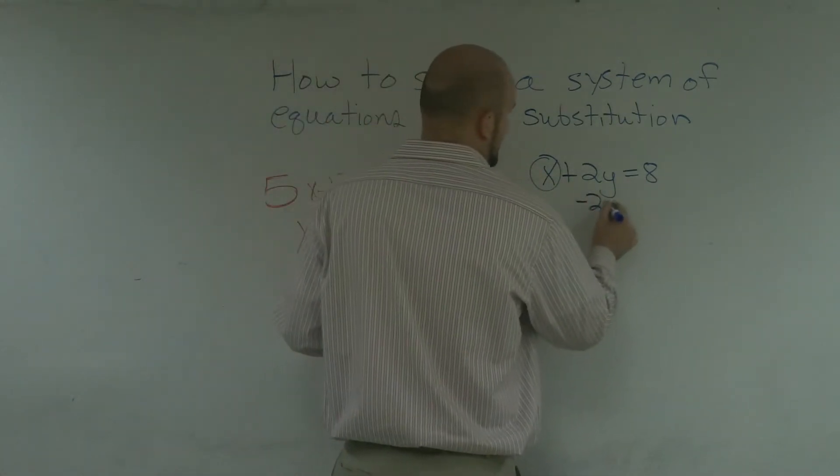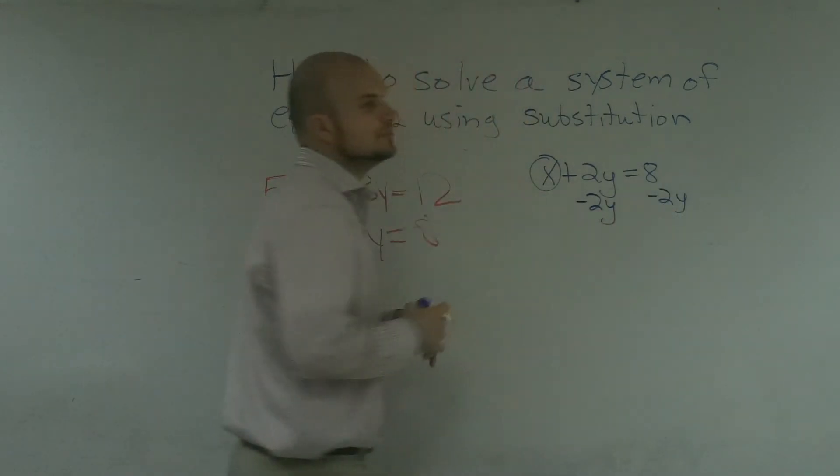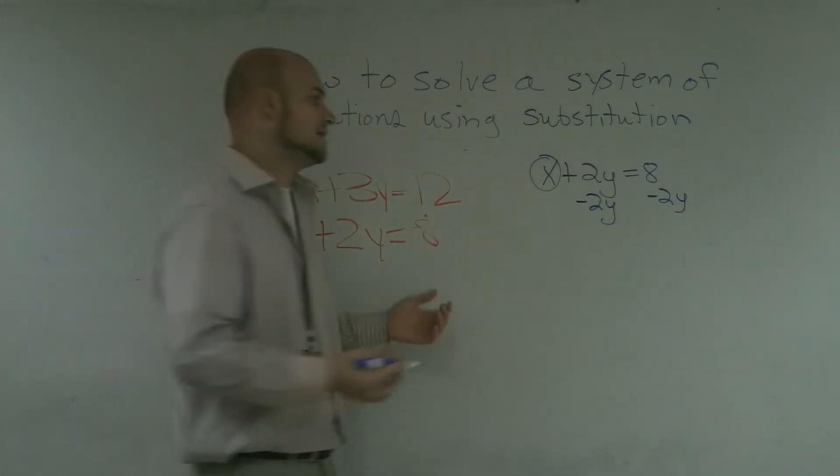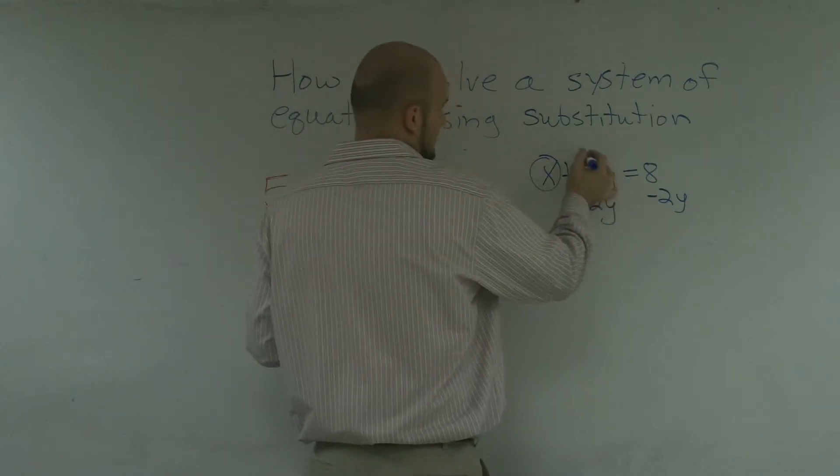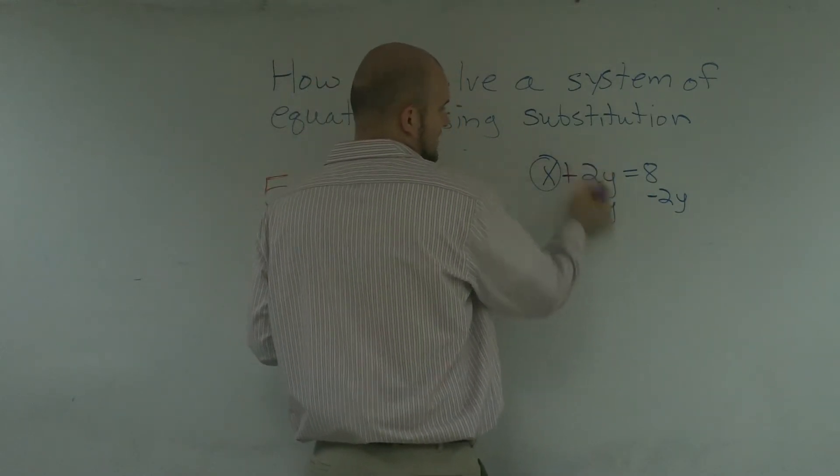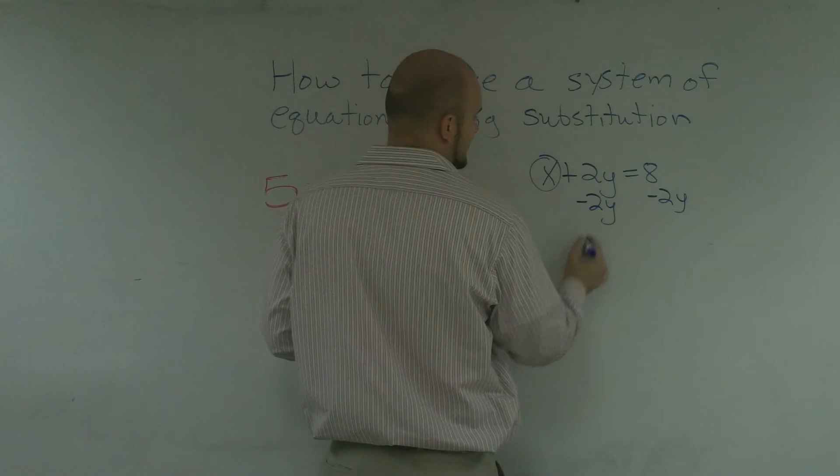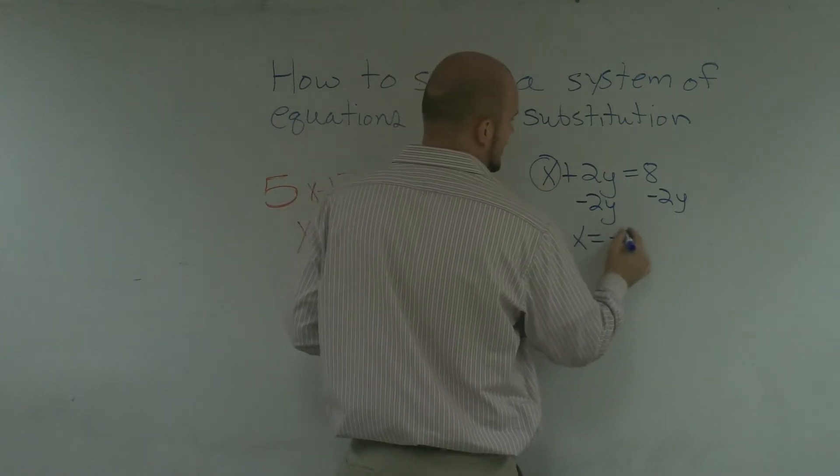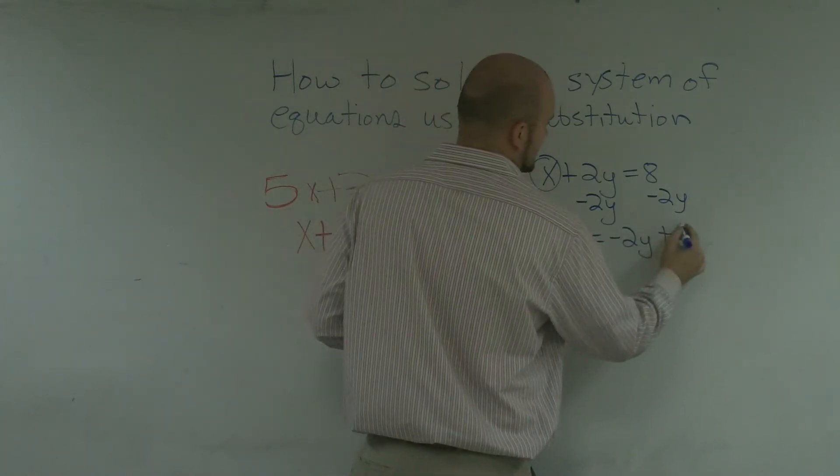Since I'm doing it onto both sides, it is a valid operation. These now are going to cancel, or they're going to turn to 0, and therefore, I'm left with x equals a negative 2y plus 8.